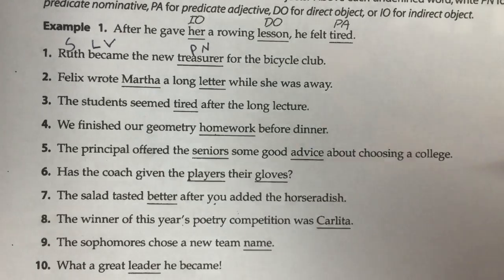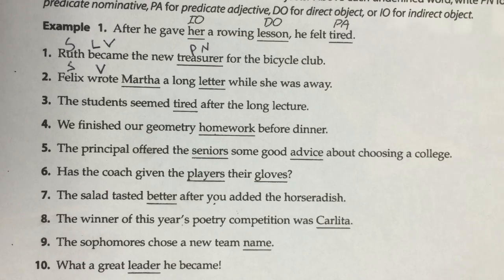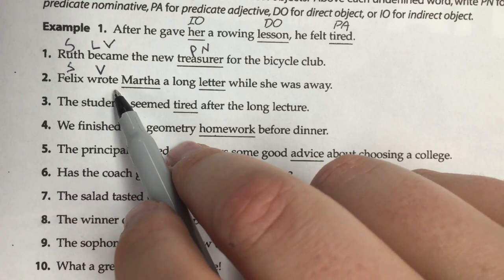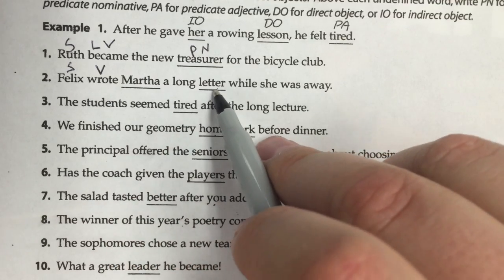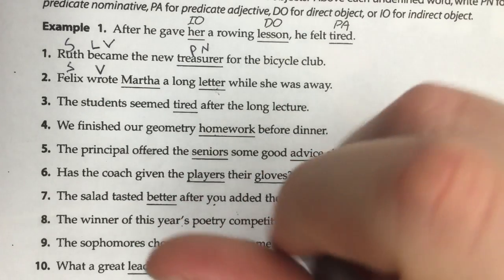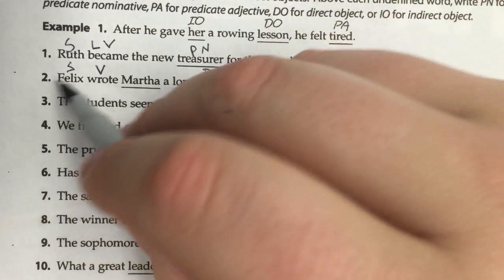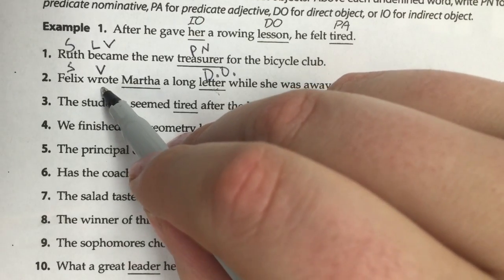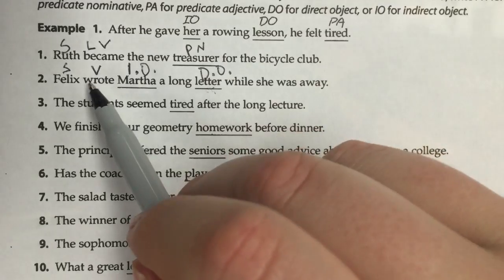Number two: 'Felix wrote Martha a long letter.' Here is our subject Felix, and the verb is wrote. It's really tempting to say that Martha receives the action of writing, but that's not true. With an action verb, you have to ask: did Felix write a person or a thing? He wrote a thing — he wrote a letter. The letter is the direct object. The indirect object is who gets the direct object. Martha will get the letter, making her the indirect object. The indirect object is always sandwiched between the verb and the direct object.